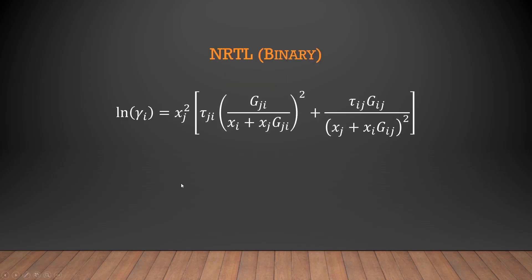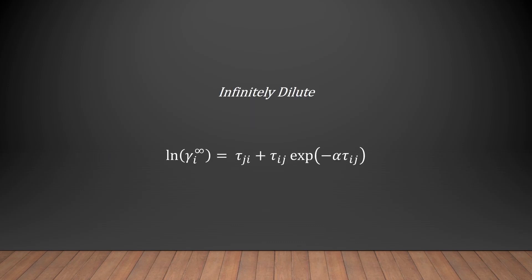Next, we have the NRTL model, which stands for non-random-two-liquid. This form of the equation is specifically for binary systems of arbitrary components i and j. It, too, uses binary interaction parameters, tau ij and tau ji. Here, alpha is used as a manual variable and not equivalent to the value of alpha from the Van Laar model. It is typically set to 0.3, but that varies depending upon the system. Again, the binary interaction parameters are determined by manipulating the previous equation for the infinitely dilute regime. Once the values of tau ji and tau ij are determined, the activity coefficients of all stages of dilution are fixed and can be determined from the previous equations.